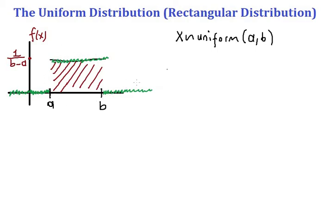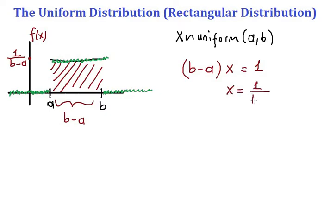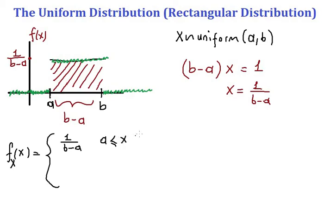The area of the rectangle is length times width. The length is b minus a, and if we call the unknown height x, then b minus a times x equals one. Solving for x gives us one over b minus a. So the probability density function f(x) equals one over b minus a for x between a and b, and zero elsewhere.